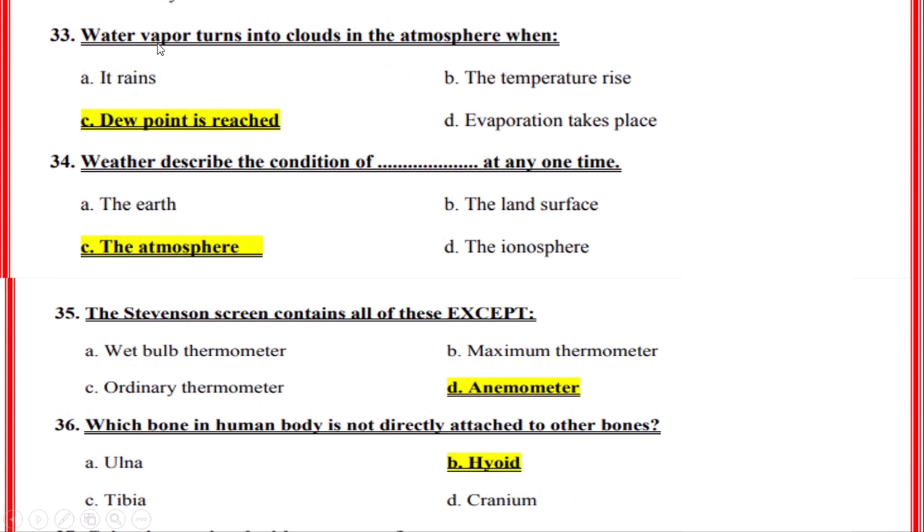Water vapor turns into clouds in the atmosphere when? Correct option: C, Dew point is reached. Weather describes the condition of what at any one time? Correct option: C, The atmosphere.